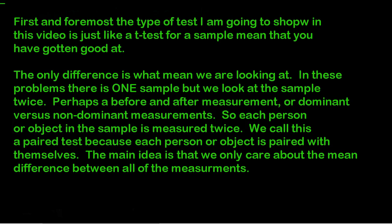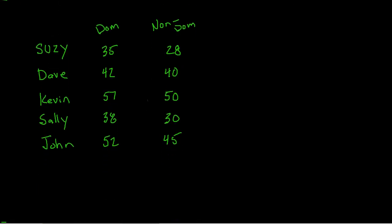The main idea is that we only care about the mean difference between all the measurements. So let's look at a rough example. Let's say that I have five people, and I have each of them throw a baseball with their dominant hand, and I measure how far they could throw it. And then I measure how far they could throw that baseball with their non-dominant hand. So I only have one Susie, but her values are paired up, her dominant and non-dominant. So it looks like I have two sets of data, but I really only have one set of data, all coming from these five people.